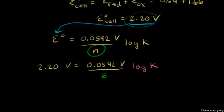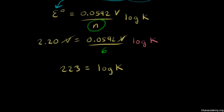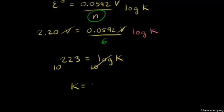Solving for log K: 2.20 times 6 divided by 0.0592 gives us 223. So 223 equals log K. To get rid of the log, we take 10 to both sides: 10 to the 223 equals 10 to the log K, which gives us K equals 10²²³, which is obviously a huge number.